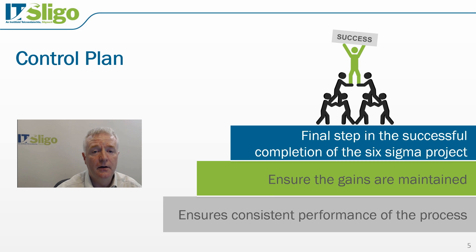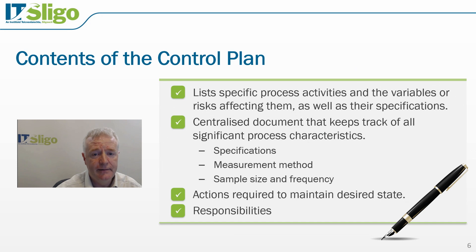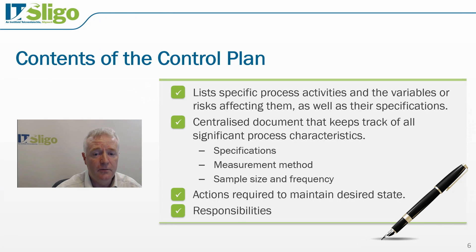The control plan ensures that consistent performance of the process is maintained into the future. It lists the specific process activities and the variables or risks affecting them, as well as their specifications. It is a centralized document that keeps track of all significant process characteristics such as specifications, measurement methods, sample sizes used, and the frequency of inspection. The actions required to maintain the process in its desired state and the responsibilities of the individuals will also be identified. This plan will be transferred to the process owners as part of the final steps of the Six Sigma project.